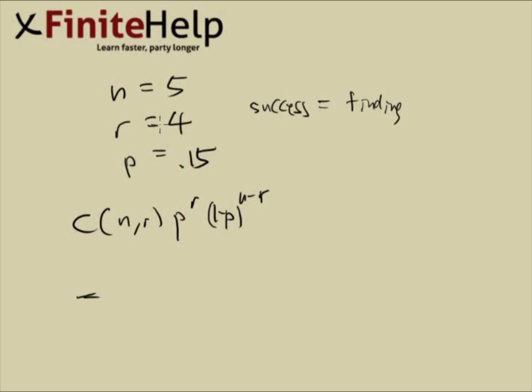Now just plug and chug into the formula: 5 choose 4, we have 0.15 to the 4, and 0.85 to the 5 minus 4, which is 1. And that's your final answer.